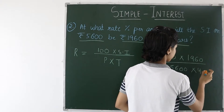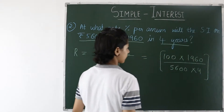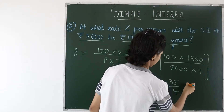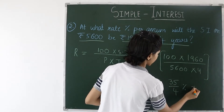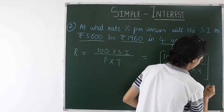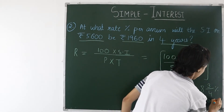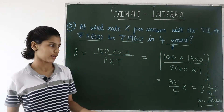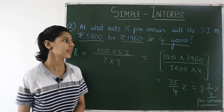Putting in the values: R = (100 × 1960) ÷ (5600 × 4). After calculation we get the fraction 35/4 percent. We convert it into a mixed fraction and get 8¾ percent per annum. Don't forget to write 'per annum' as it shows the rate is charged every year, annually. So this is the rate percent, calculated using the formula R = (100 × SI) ÷ (P × T).